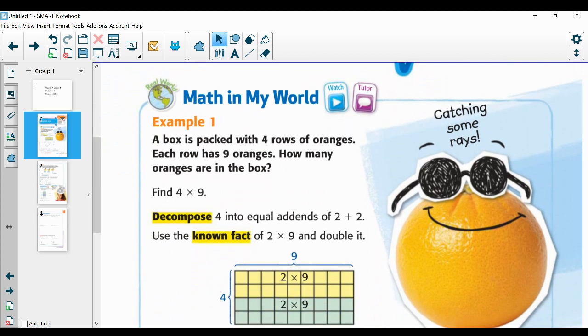So we have a word problem. We're going to do our three-read strategy to explore this word problem. A box is packed with some rows of oranges. Each row has some oranges. Okay, so I have a box. I see rows of oranges. I see oranges in each row. Every row has the same number of oranges.